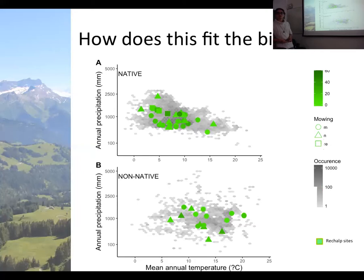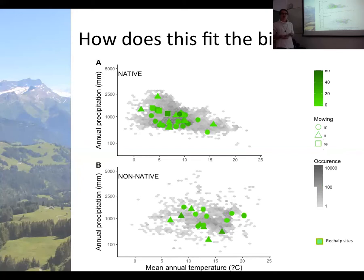The precipitation variable in the model is not raw precipitation but rather precipitation minus potential evapotranspiration — a moisture index measuring what water is actually left available. At high elevations, precipitation arrives as snow and is not immediately available for plant growth; it melts later, so the moisture dynamics differ substantially from lower elevations. The model variables are defined this way to capture growing-season conditions more meaningfully.